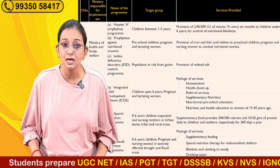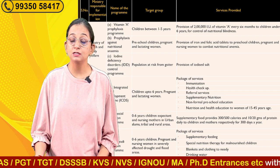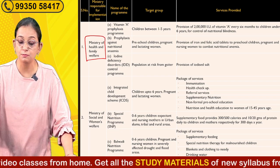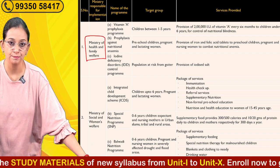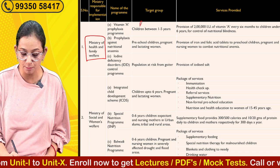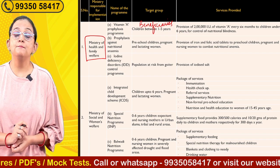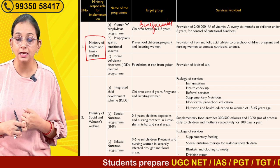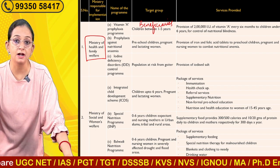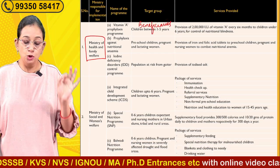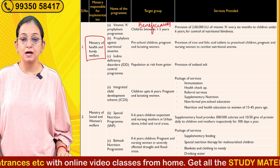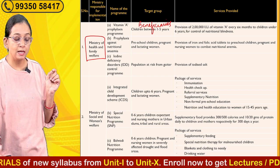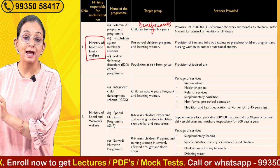The first community nutrition program is the Vitamin A Profile Access Program, which is run by the Ministry of Health and Family Welfare. The beneficiaries are children between the age of one to five years. The service provided is two lakh international units of Vitamin A every six months to children under six years, for the control of nutritional blindness. Previously this was known as the Vitamin A Profile Access Program for Nutritional Blindness Control.